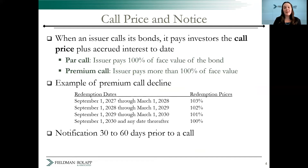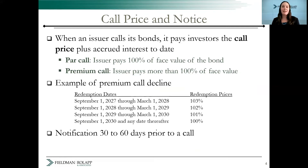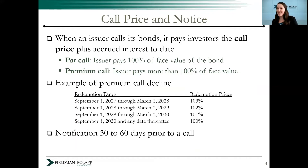When only face value plus accrued interest is paid, it's called a PAR call. However, sometimes the bondholders need to be compensated for their bonds being called away from them earlier, and thus the issuer pays a premium call price. The amount of premium can decline incrementally after the initial call date. For example, if these bonds are called between September 2027 and March 2028, the issuer would have to pay the face value of the bonds outstanding plus accrued interest plus an additional 3% of PAR in premium. Often at least 30 days before the redemption, the trustee will also need to notify the current bondholders that their bonds will be called.